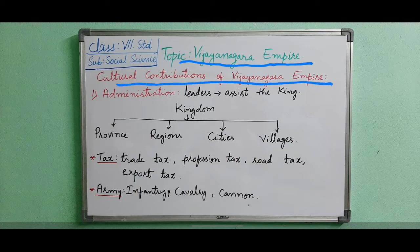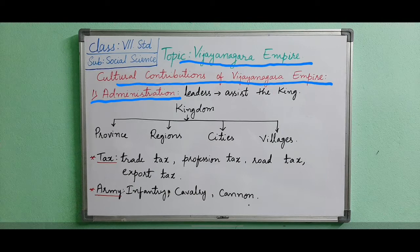In this we will discuss about administration, social system, economic status, literature, religion, harmony, and art and sculpture. First we will see what is the meaning of administration. Administration means the act of managing something. The Vijayanagara kings had central administration and they adopted a decentralized administrative system.